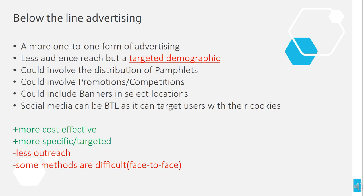An independent company, for example, might have a really specific audience in mind — like horror fans of a particular age range — and think about how to target those specifically. One way is to hand out leaflets or pamphlets to people who are interested. You could do competitions related to something else they might be buying — for example, after another horror film they've seen. You could put banners or posters in particular locations, like posters in gyms for a sports movie. Social media can also be classed as below the line because adverts can be targeted to a specific demographic.